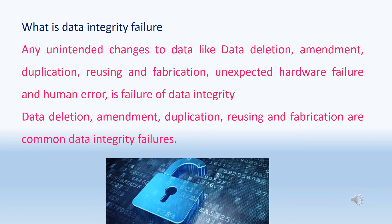What is a data integrity failure? Any unintended changes to data — such as data deletion, amendment, duplication, reusing, fabrication, unexpected hardware failure, and human error — are data integrity failures. For example, changing analytical results, deleting original data, or replacing original data with other data in HPLC are some data integrity failures.